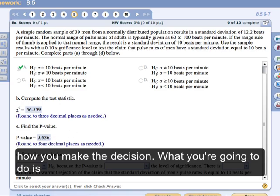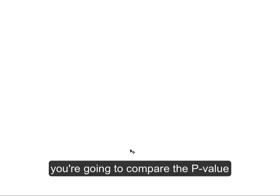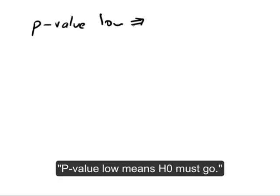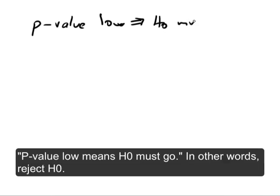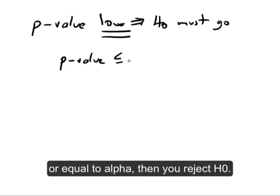Now remember how you make the decision. What you're going to do is you're going to compare the p-value to alpha. And there's kind of a mnemonic that we have, which was if the, we say p-value low means H0 must go. In other words, you reject H0. Now what does low mean? It means if p-value is less than or equal to alpha, then you reject H0.